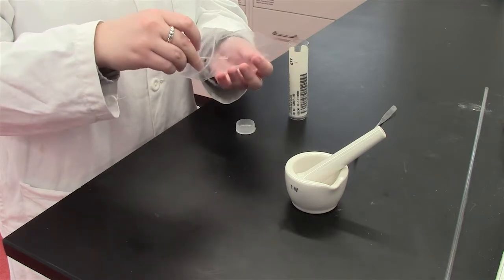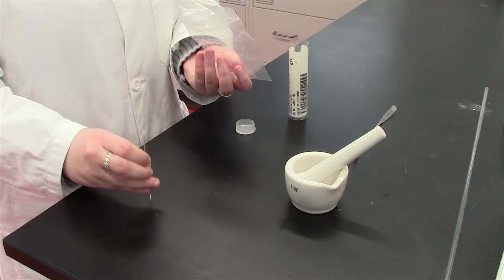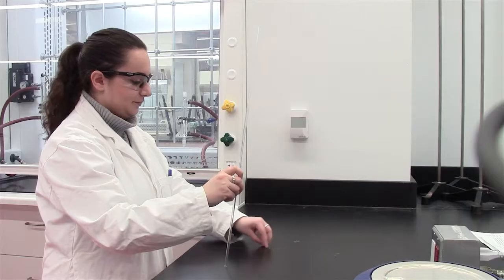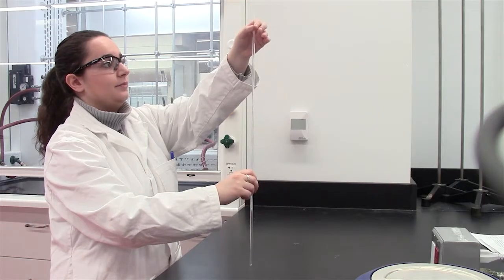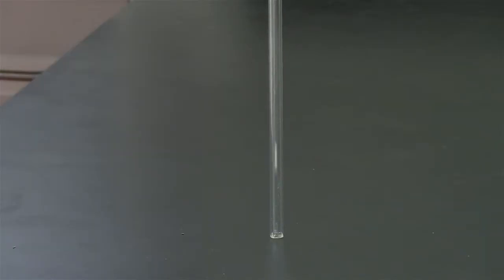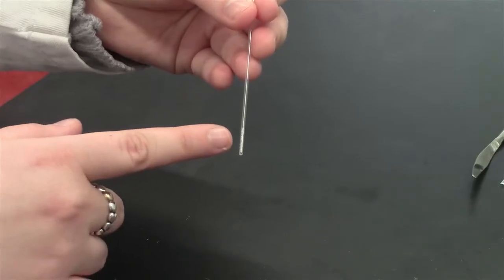To lower the substance to the bottom of the tube, either tap the capillary tube vigorously on the bench top or drop the tube into a long clear plastic tube and allow it to bounce on the bench top. Ensure that there is approximately 3 mm of sample within the tube.